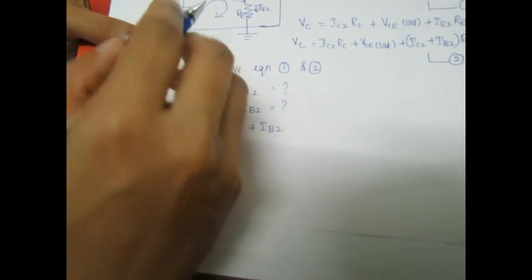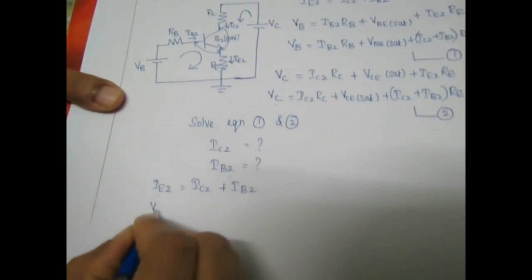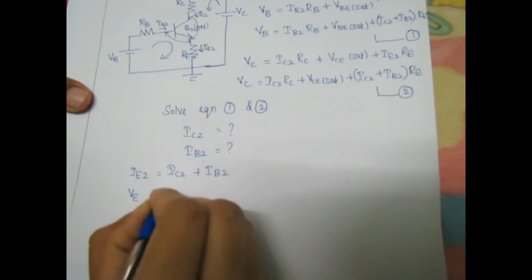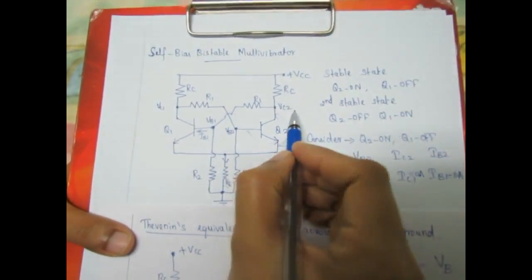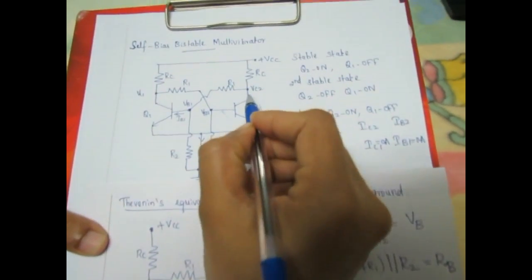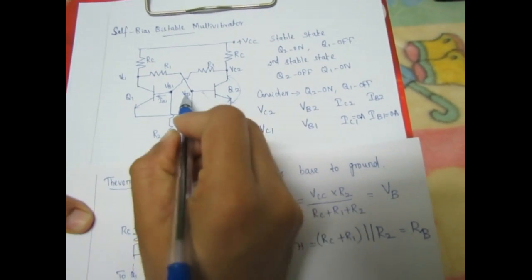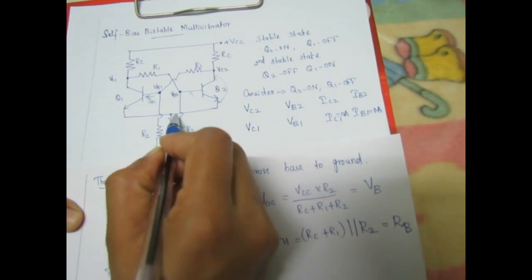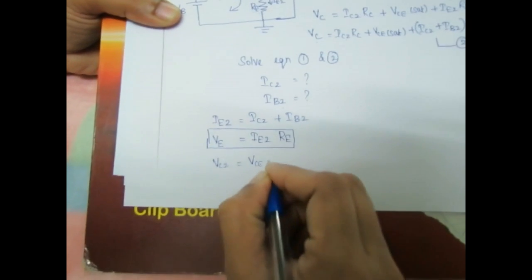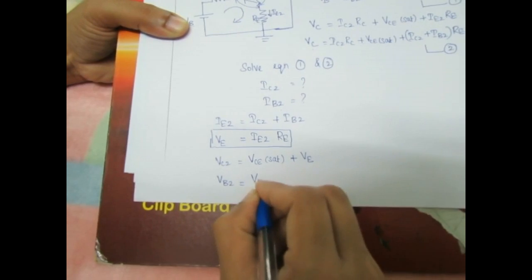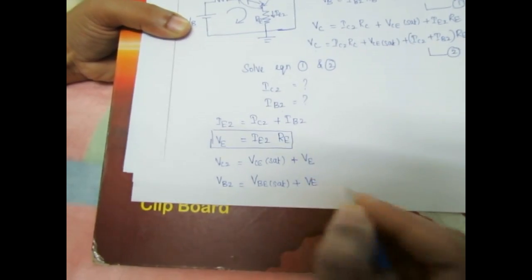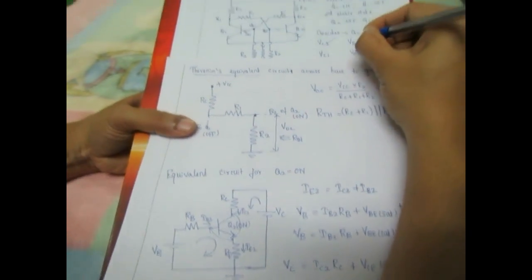Once we know Ic2 and Ib2, we find IE2 = Ic2 + Ib2, which is the current flowing through the emitter resistor. The emitter voltage is Ve = IE2 · RE. Then for the self-biased bistable multivibrator: Vc2 = Vce_sat + Ve, and Vb2 = Vbe_sat + Ve. Thus we have found Vc2, Vb2, Ic2, and Ib2.